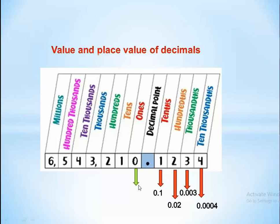Now let's look at the numbers before the decimal point. We have zero as the units, then tens — equal to ten, hundreds — equal to one hundred, two hundreds equal two hundred, three thousands equal three thousand.